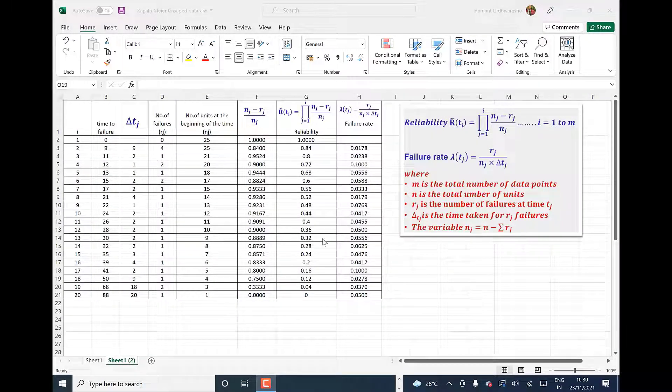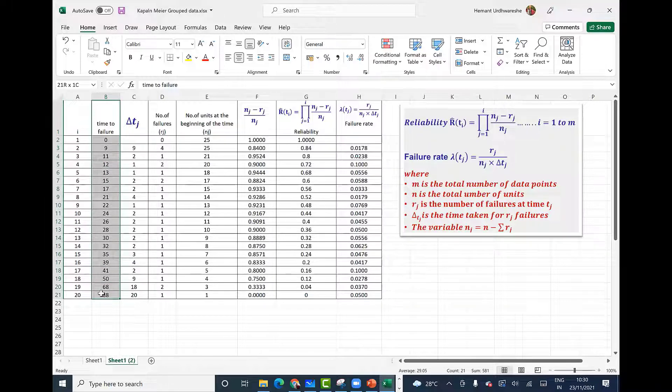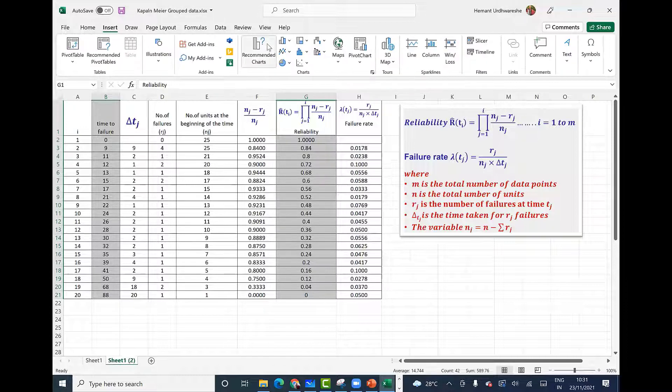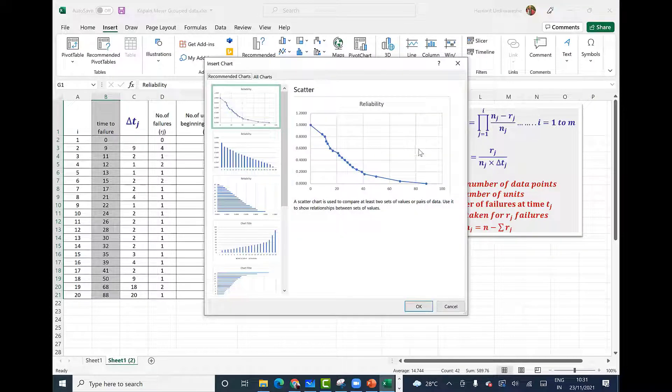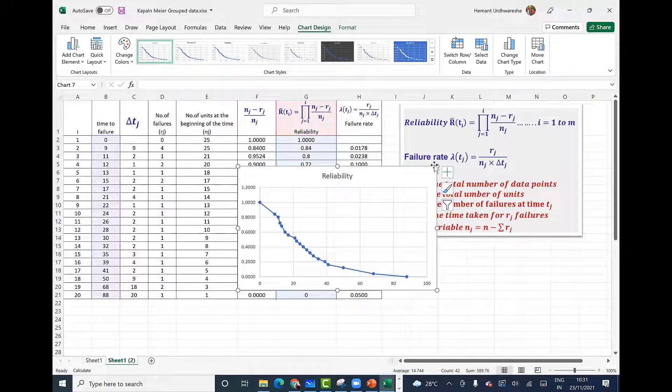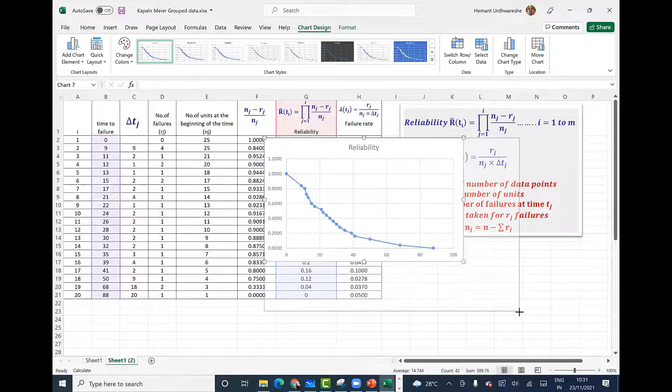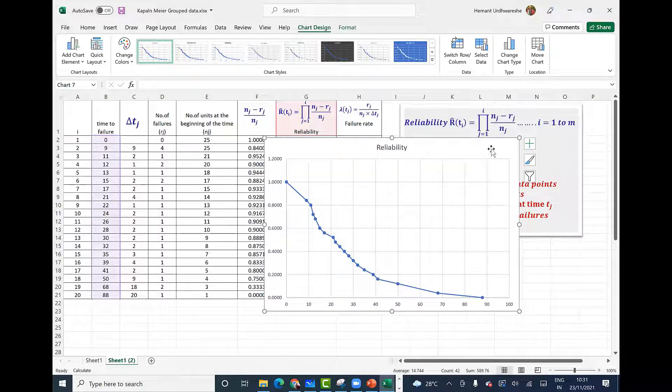We can also plot of time to failure versus reliability. So I select time to failure, press control button and then select reliability column and I can insert recommended chart. It could be this one. You could choose other charts also. This is reliability of time. Reliability versus time. So x-axis is time and y-axis is reliability.